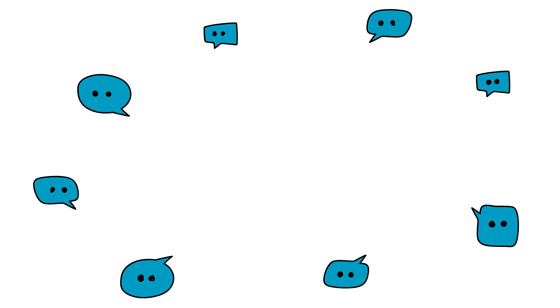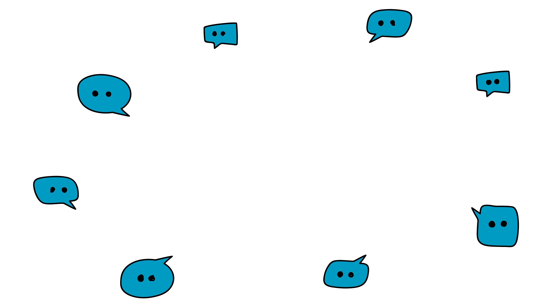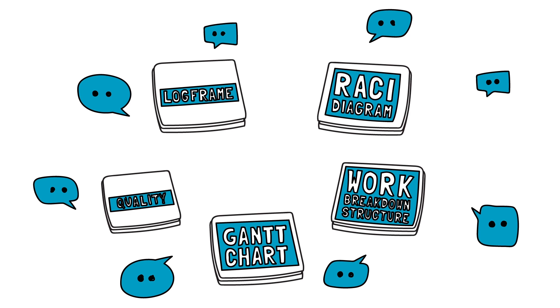Fortunately, because the team has been using the project management tools, the answers to questions in the implementation plan can be found in existing documents: the log frame, the work breakdown structure, the Gantt chart, and the RACI diagram. More complex projects may also include sections in their plans that address procurement, quality, communications, and risk management.